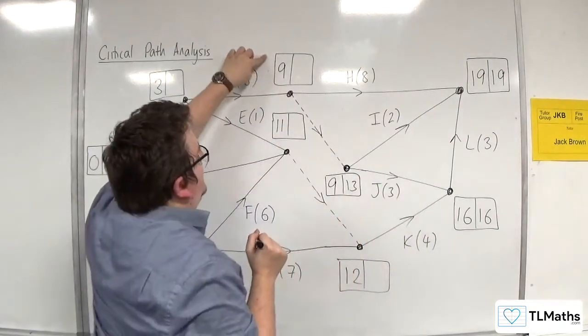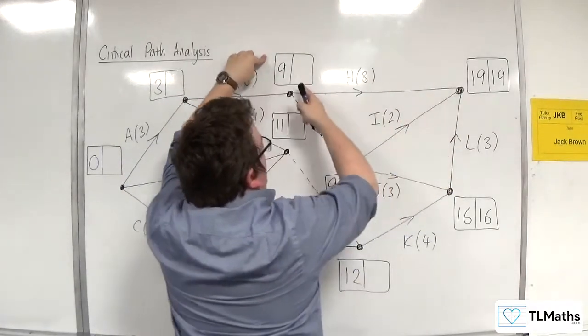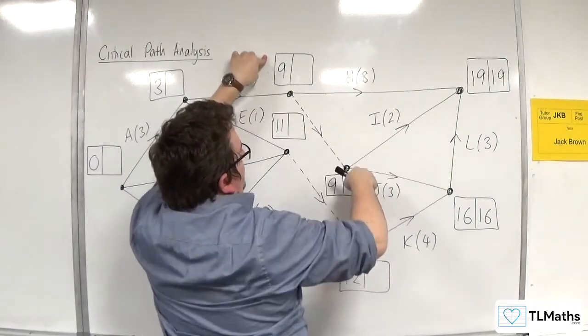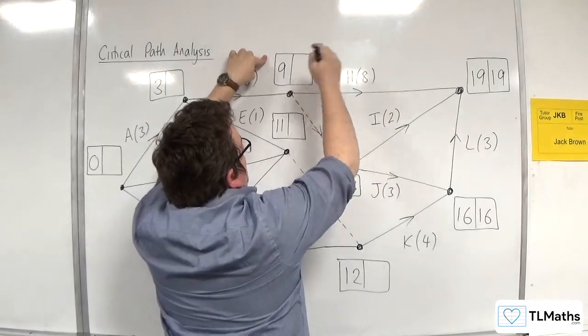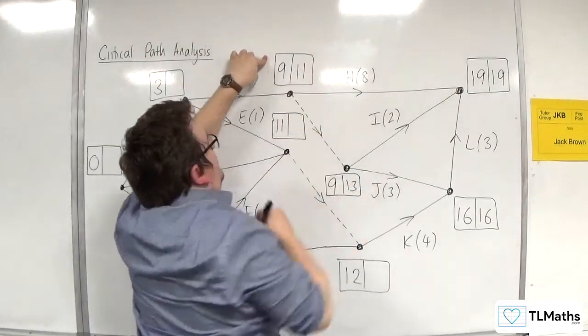Now for this box here, we've got 19 take away 8, so 11, or 13 take away 0. So we take the smaller, so 11.